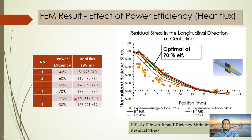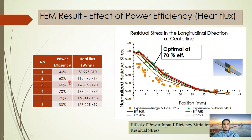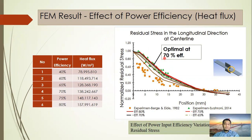We also need to determine the power efficiency of the welding process. Using the SMAW or MMA welding process, we know it is around 70%, but to confirm, we calculate which power efficiency value produces the best-fit curve to the scatter data from the experiment. We obtain the optimal value at 70% power efficiency.